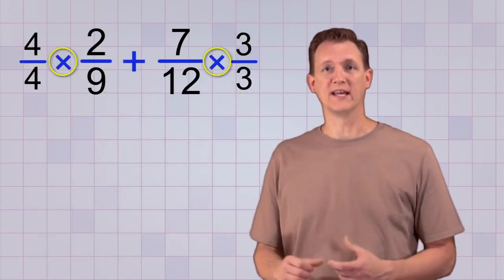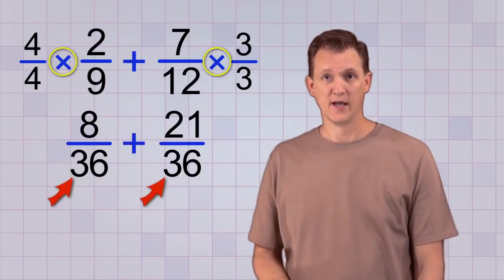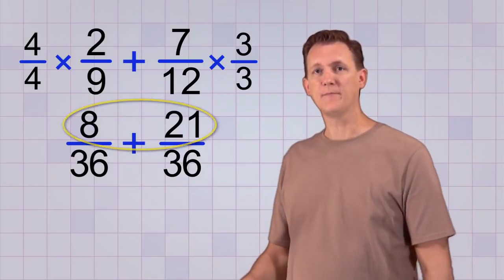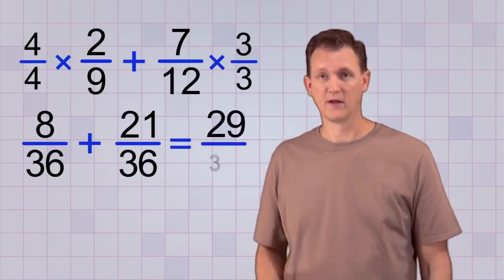There! Now when we multiply, we get two new but equivalent fractions that have a common denominator. Now we can add them with our simple procedure. On the top, 8 plus 21 equals 29, and we keep the same bottom number, 36.